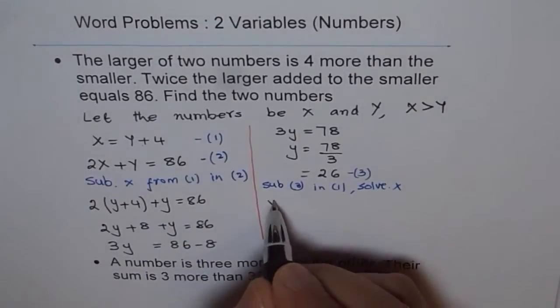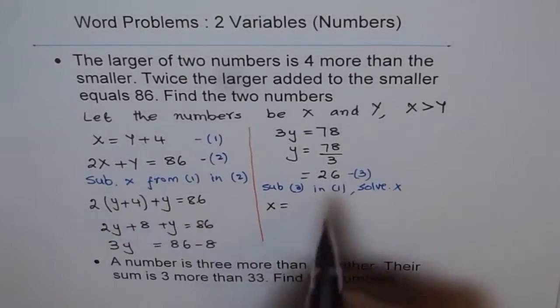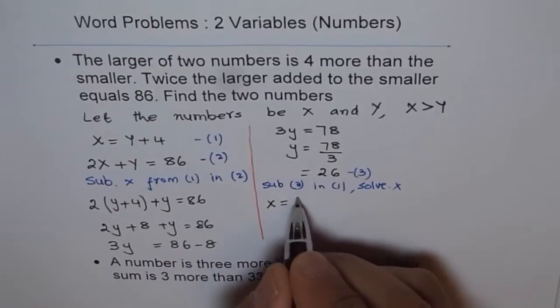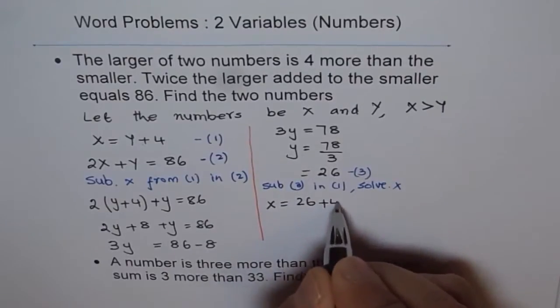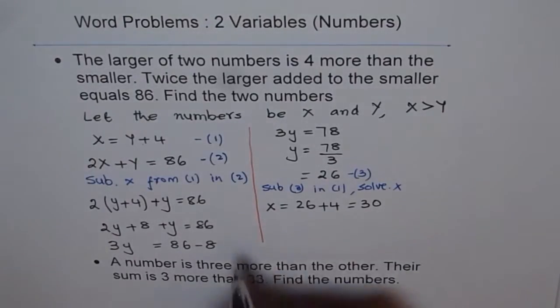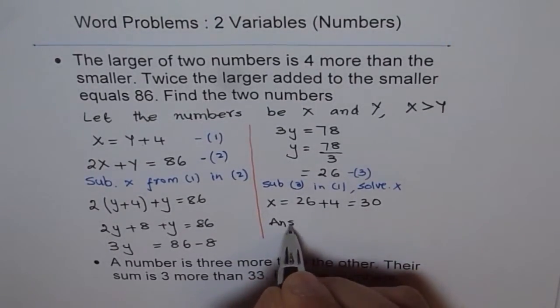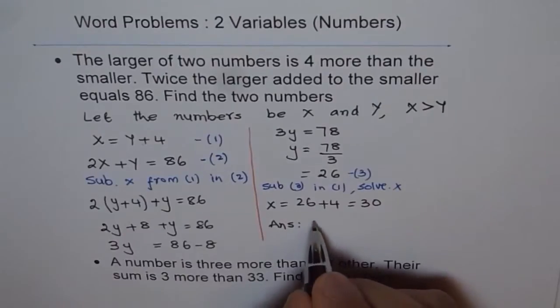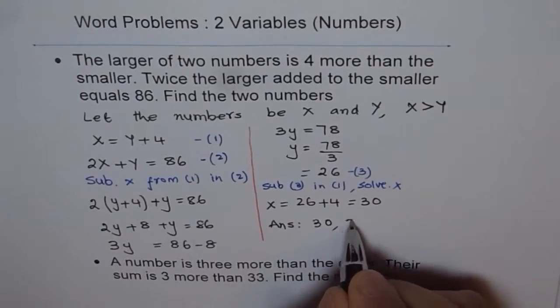So x is equal to y plus 4. Instead of y, I will write 26. 26 plus 4, which is 30. So we get the value of x also. So therefore, our answer is, the two numbers are 30 and 26.